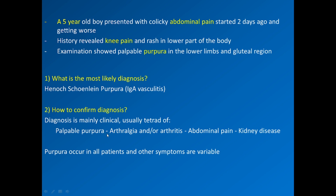There is a tetrad of palpable purpura, arthralgia or arthritis, abdominal pain, and kidney disease. Purpura is always present in 100% of cases. The other symptoms are variable.